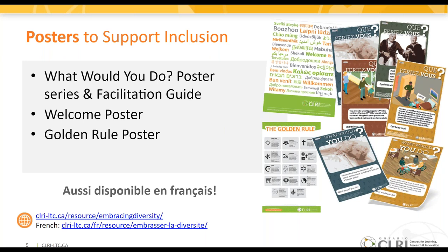Our welcome poster and golden rule poster can be hung in common areas. The welcome poster has the word 'welcome' in the 40 most commonly spoken languages in Ontario, and many homes have placed it in their entryway. The golden rule poster lists key guiding principles for more than a dozen religious, spiritual, and faith-based practices, bringing awareness to sacred writings and illustrating the interconnectedness between core teachings. It can be hung in a multi-faith space to help people feel welcome. All resources are available in English and French, and hard copies can be requested.